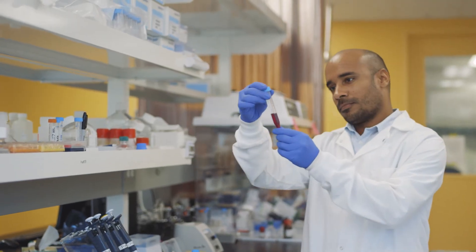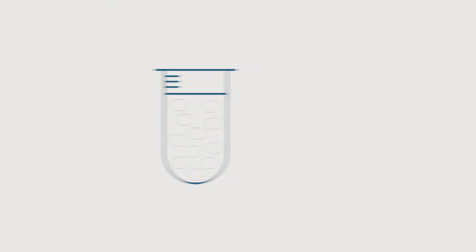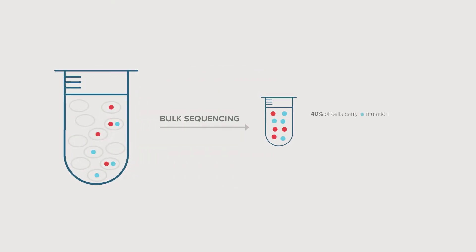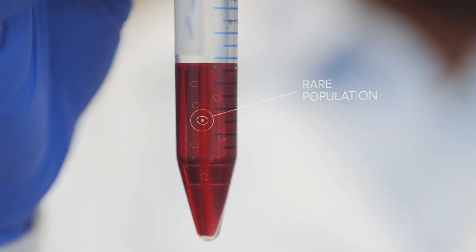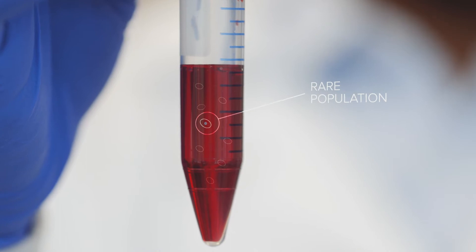Currently, researchers use bulk DNA sequencing to study diseases like cancer. This technology provides an average readout of the thousands of cells within a sample. But the problem with averages is that you miss the underlying mutational diversity across cells.